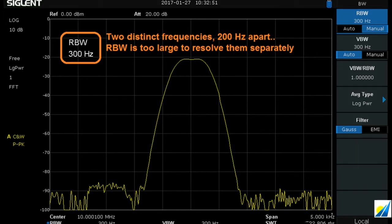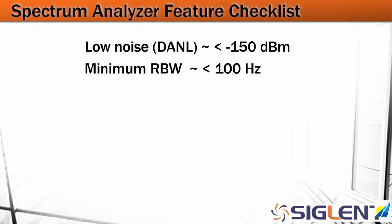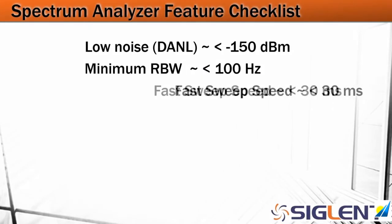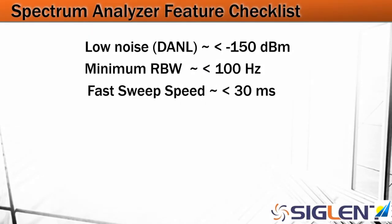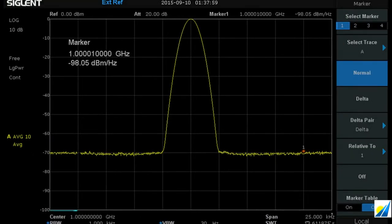Smaller resolution bandwidths are going to give you lower noise and more resolution between frequencies. We're also going to want a faster sweep speed — the faster the sweep speed, the faster we can collect data and get done with our job. You're also going to want to look for low phase noise; we want the phase noise of the measurement instrument to be considerably less than the phase noise of our device under test, especially when measuring transmitters and oscillators.